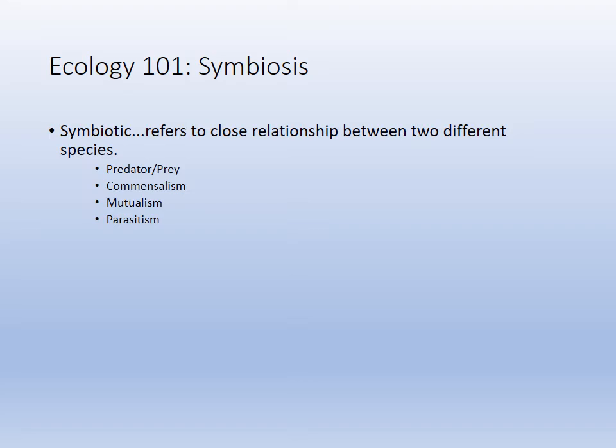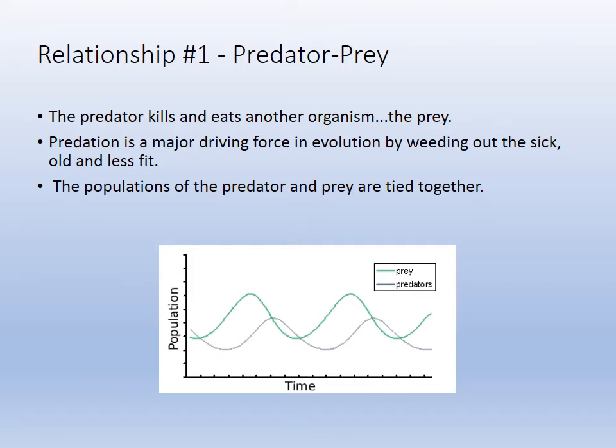Commensalism gets a plus-N rating: one benefits, one is neutral. Mutualism gets plus-plus: both benefit. Parasitism gets plus-minus: one is harmed (the host). For predator-prey, the boom and bust curves show when predators are on the incline, prey is on the decline, and when prey hits a low, predators start to starve and decline, which allows prey to incline again. They're a little out of phase but the populations follow each other — that's a predator-prey population curve.